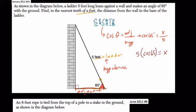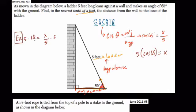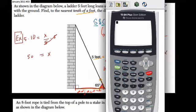This is just like an algebra equation. If we have 10 equals x over 5, we multiply both sides by 5 to isolate x — the 5s cancel out and x equals 5 times 10, or 50. Same process here, except instead of a plain number we have the cosine of 65.